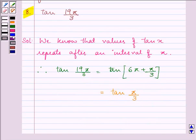Because if we simplify, we will get 19π/3. It can be further written as tan(π/3).